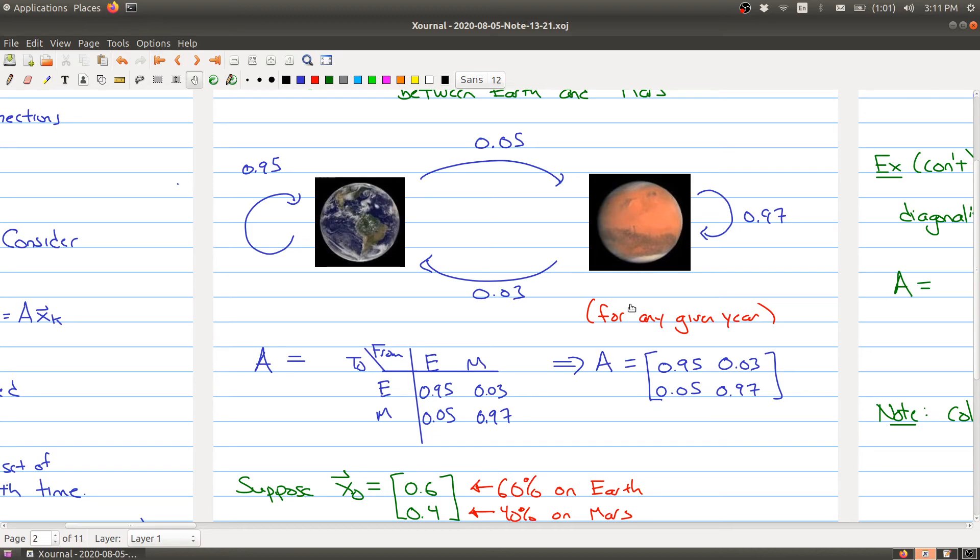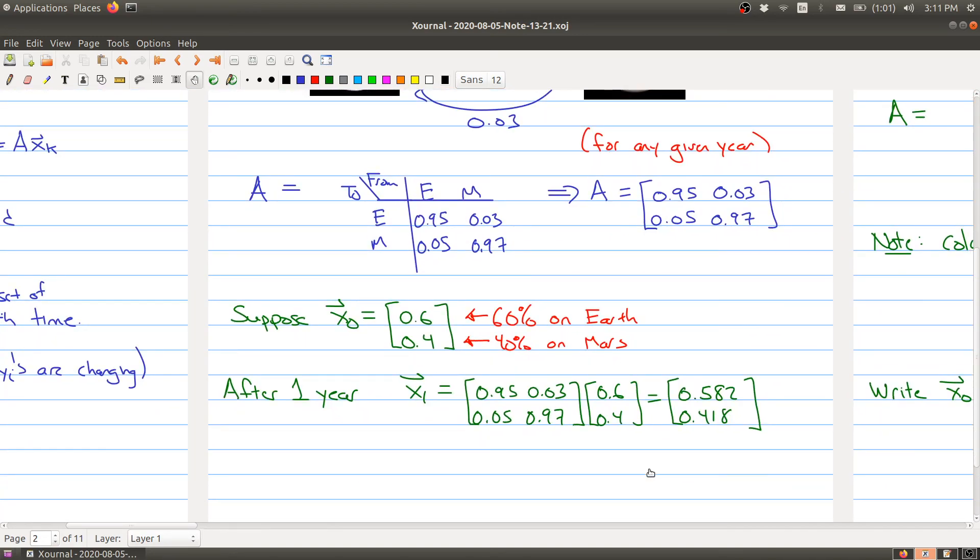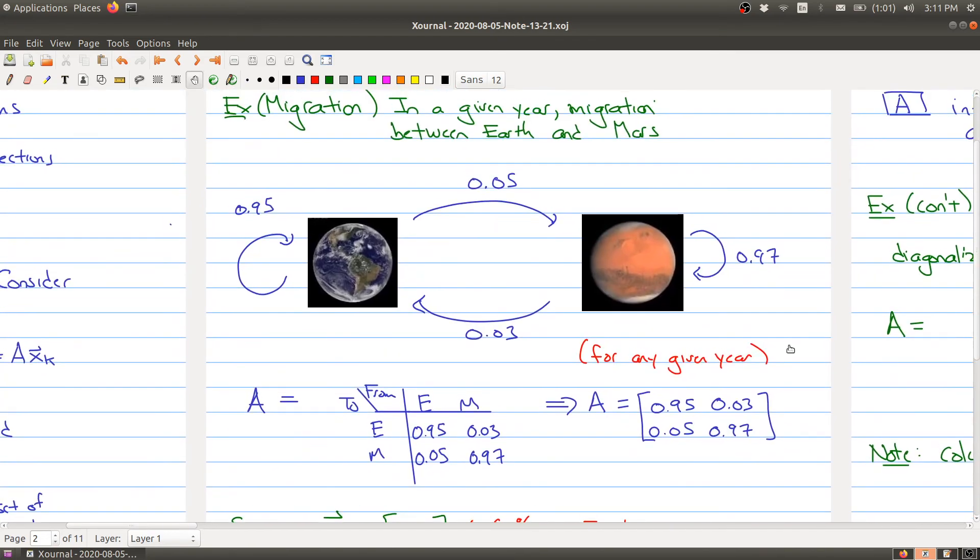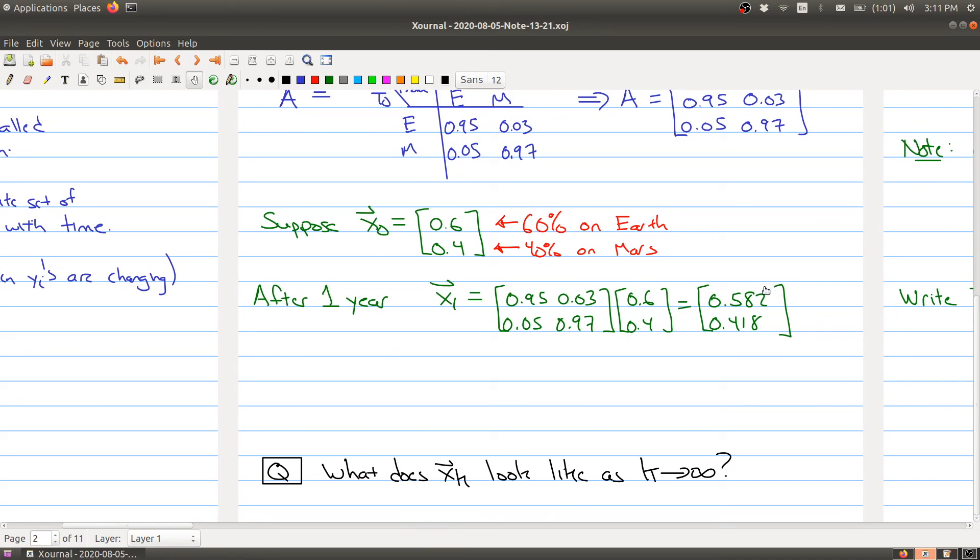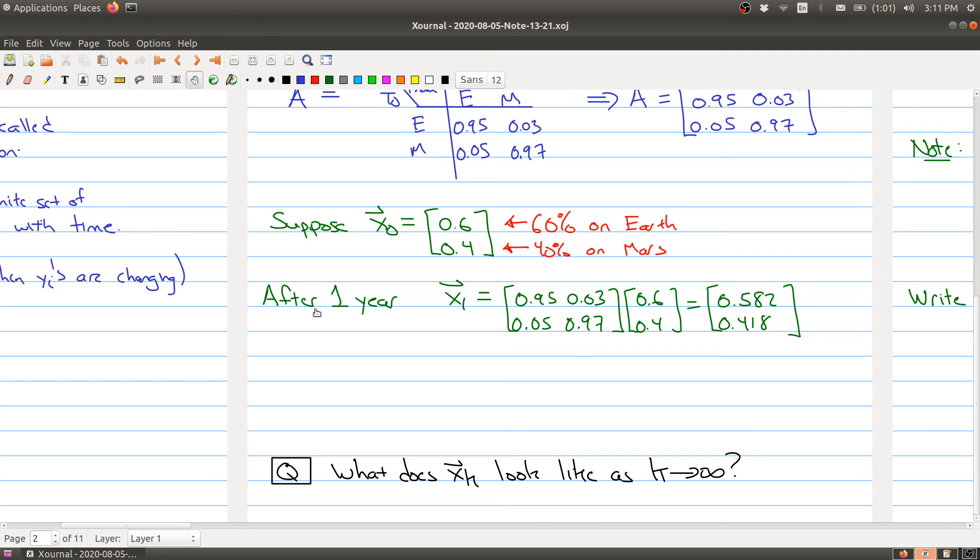Looking at our initial setup, this makes sense because we have a net flow—percentage-wise, more people are going to Mars versus leaving Mars. But say you're working on the planetary council and want to figure out what happens in the future to determine your services. That leaves a good question: what does x_k look like as k goes to infinity? We want to look at x_2 = A·x_1, then year three, and so on. What happens as we let time go to infinity? We'll pause here to give you a chance to think about it, then we'll come back to a way to get at an answer.